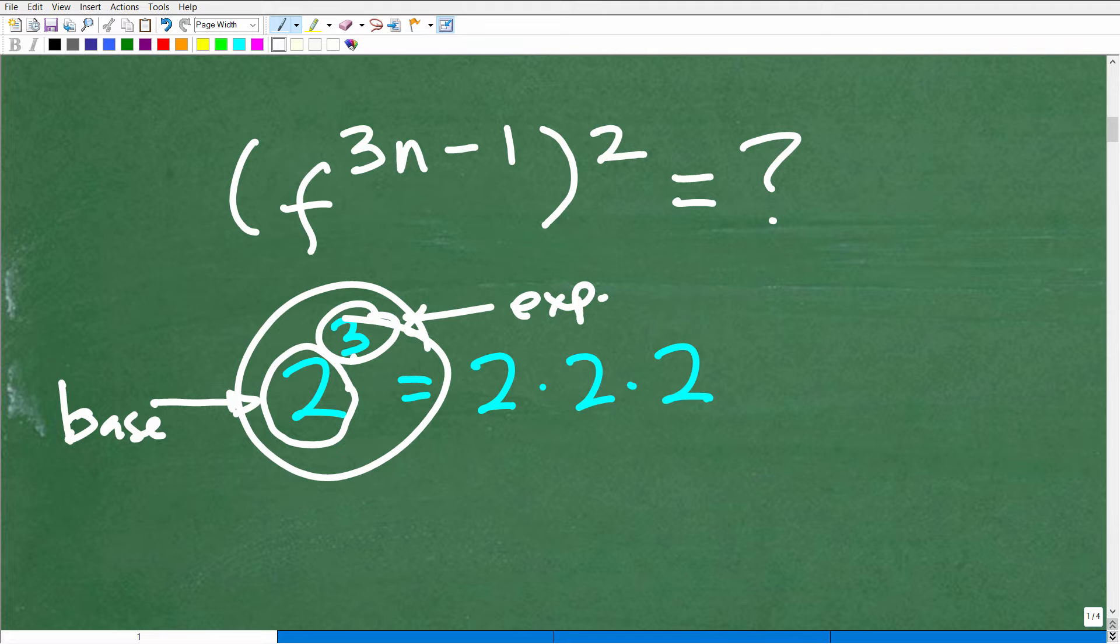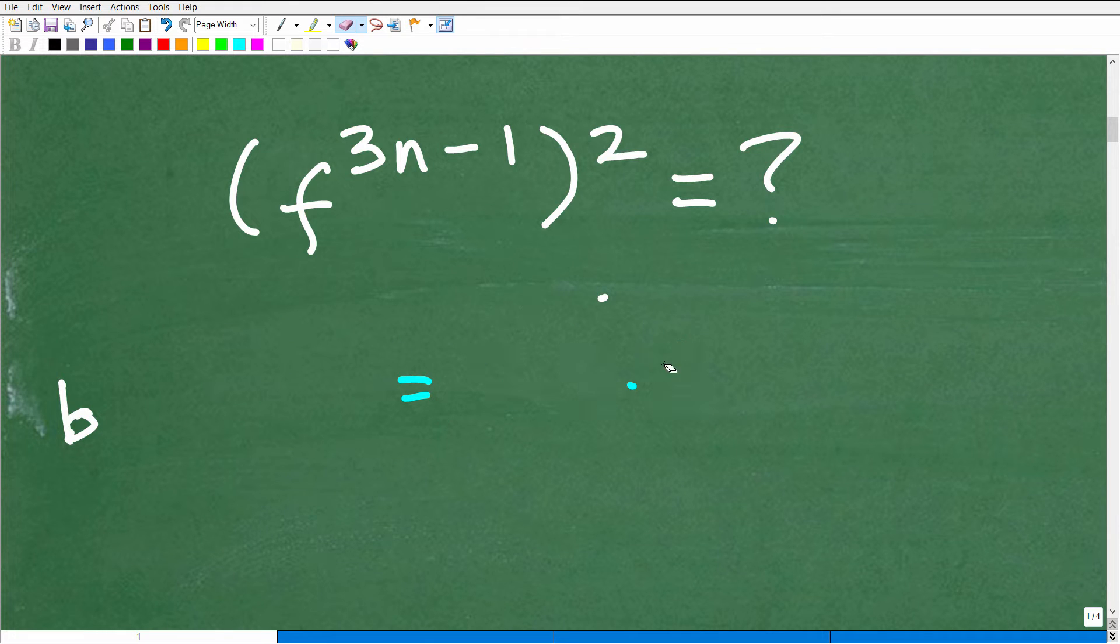So we have two to the third power, but just be mindful that there's a base and an exponent when we're talking about powers. Here in this particular problem, f is the base and 3n minus 1 is the exponent. Now this entire power, we're taking to another power. So that's kind of the situation.